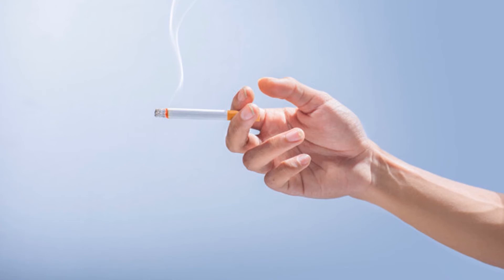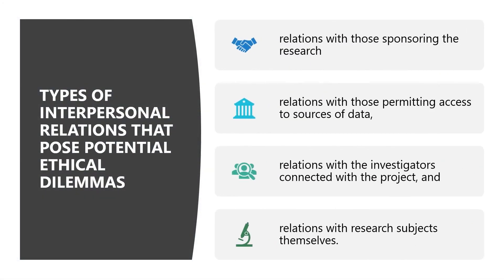There are four types of interpersonal relations that pose potential ethical dilemmas: relations with those sponsoring the research, relations with those permitting access to sources of data, relations with the investigators connected with the project, and relations with research subjects themselves.